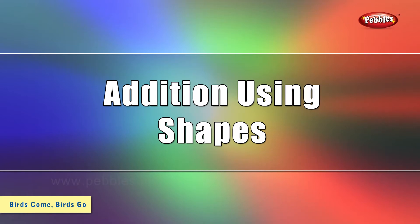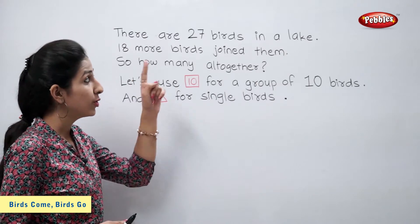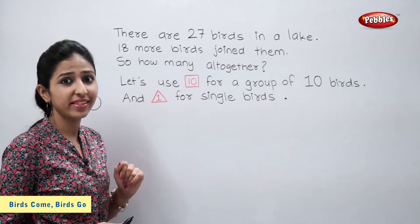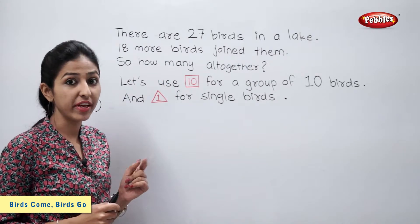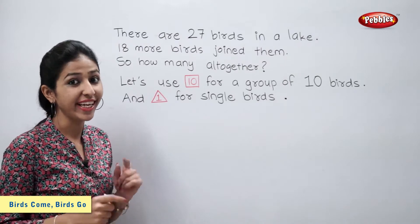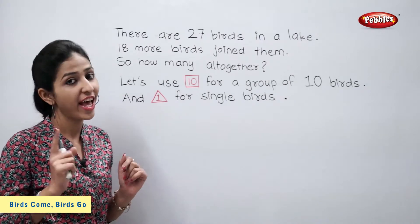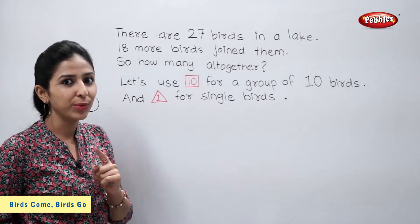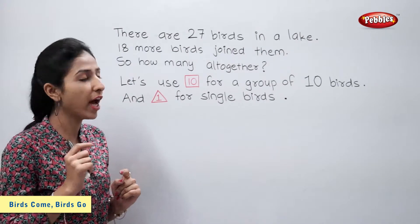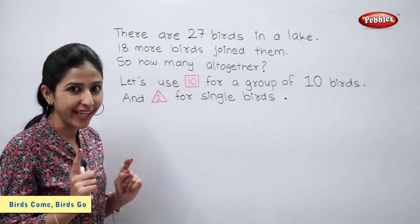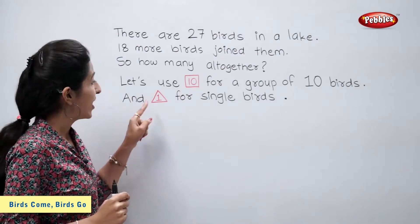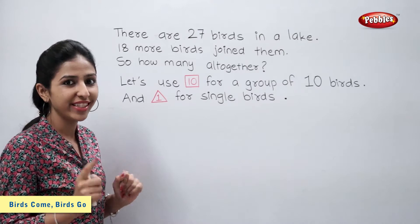Addition using shapes. There are 27 birds in a lake. Let's write 27 using tens and ones. Remember, students, we have to use a square for tens and a triangle for ones.